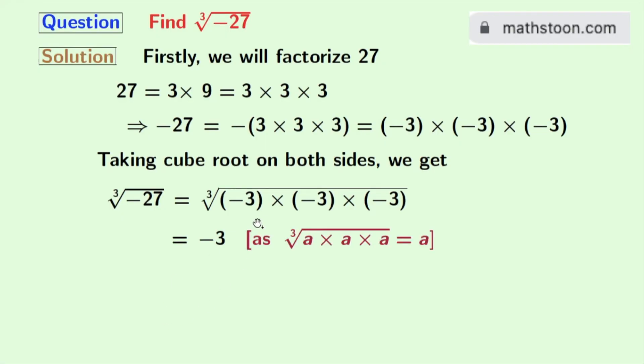As we know that cube root of a times a times a equals a. Here a is minus 3. So finally, we get cube root of minus 27 equals minus 3. This is our final answer.